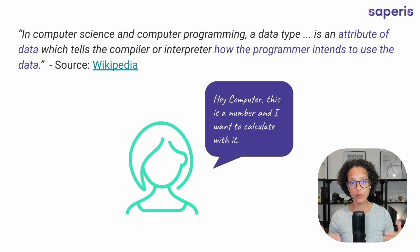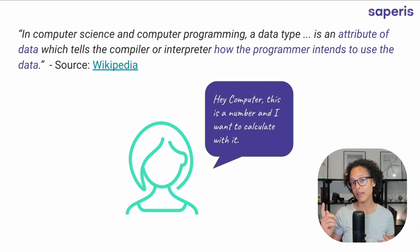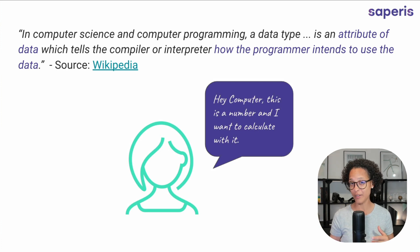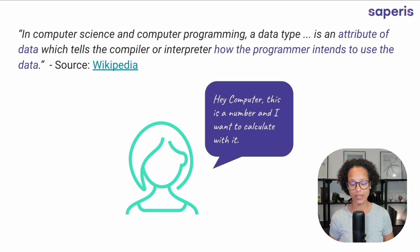So data types is something that we know in JavaScript — different data types exist and we interact with them. But unlike certain other programming languages, when you're creating a variable and assigning a value to that variable, you don't have to explicitly say this is a number I'm going to calculate with it. The simple fact of us writing or storing a number in the variable is enough to already make clear what type of data type we're dealing with.